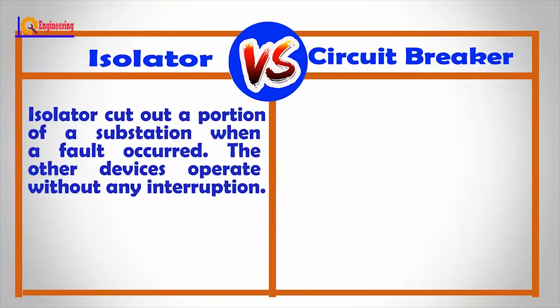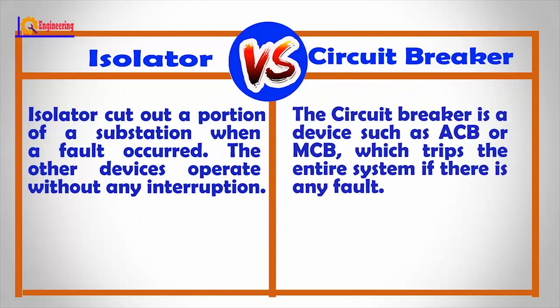An isolator cuts out a portion of a substation when a fault occurs, allowing other devices to operate without any interruption. A circuit breaker, such as an ACB or MCB, trips the entire system if there is any fault.